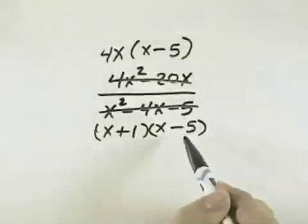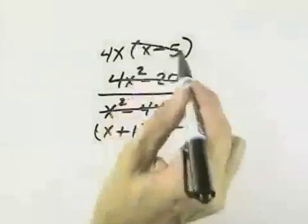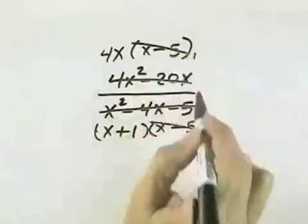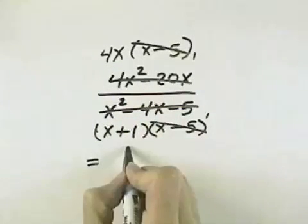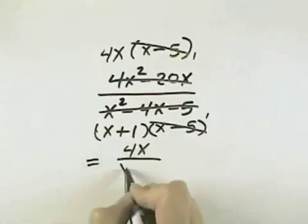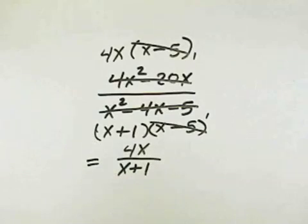Which now means we do have a common factor in the numerator and the denominator. That common factor is x minus 5, so we can cancel those out, leaving the 4x in the numerator and x plus 1 in the denominator as the simplified form.